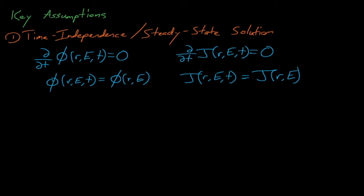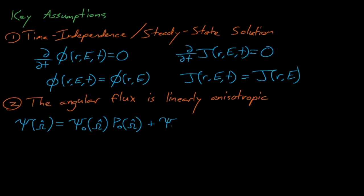The second assumption assumes that the flux is only linearly anisotropic, which is another way of saying that the angular flux is only weakly dependent on direction omega. We can decompose the angular flux into a sum of orthogonal basis functions, and from here we can express any omega-dependent angular flux as a sum of its orthogonal bases P0, P1, etc. that are weighed by some angular flux constant coefficients psi0, psi1, etc.